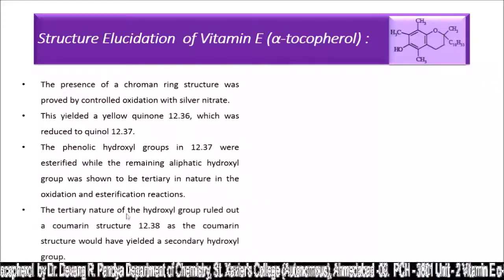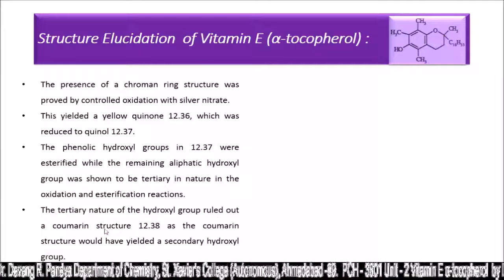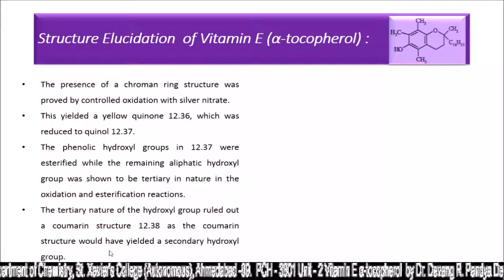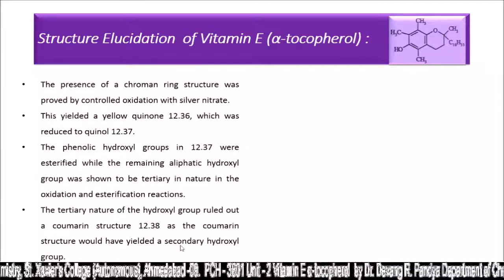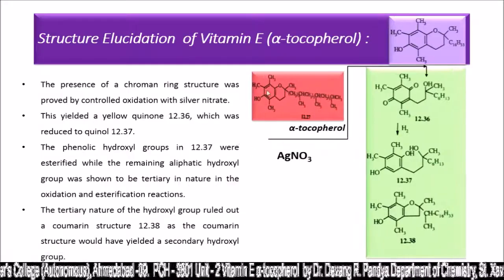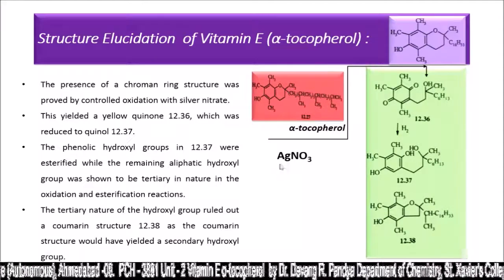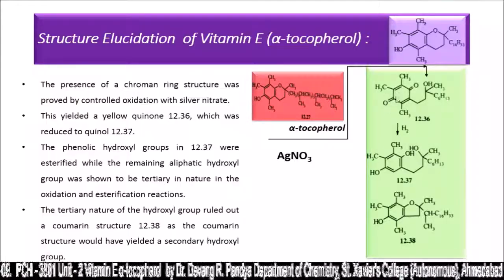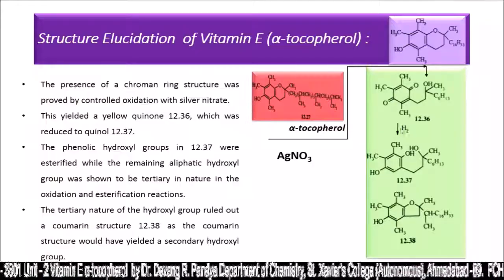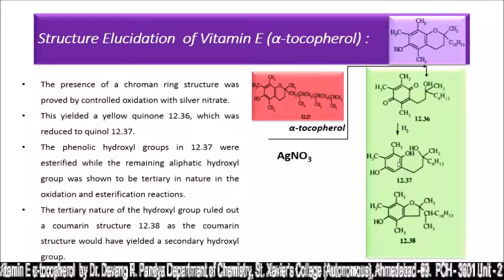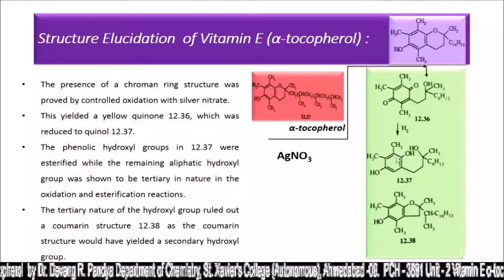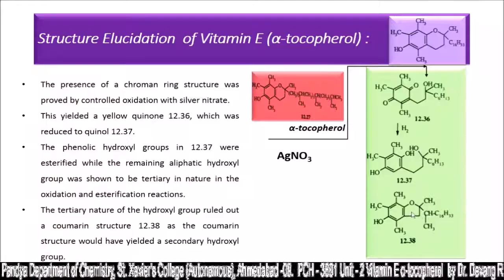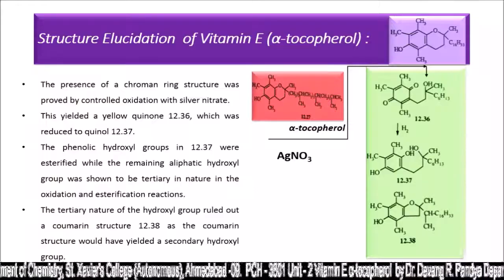The phenolic hydroxyl groups in quinol 12.37 were esterified, while the remaining aliphatic hydroxyl group was shown to be tertiary in oxidation and esterification reactions. The tertiary nature of the hydroxyl group ruled out a coumarin structure (12.38), as the coumarin structure would have yielded a secondary hydroxyl group. Treating alpha tocopherol with AgNO3 gives a yellow quinone, and reducing that quinone with H2/Pt gives the quinol, and esterification of the phenolic hydroxyl group gives the coumarin-type structure.